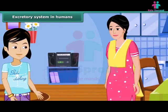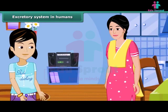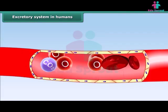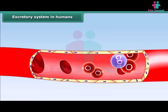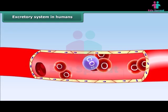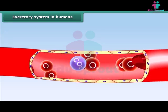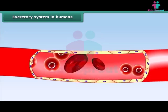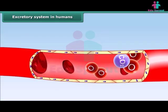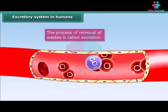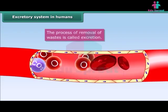Vanita comes home after jogging covered in sweat. Her mother asks her to take a bath. Sweat is a waste that must be removed from the body. Blood collects waste from different parts of the body — these wastes are carbon dioxide, water, salt, urea, and uric acid, which are the result of the metabolic activities of the body. Since they are toxic, they must be removed. The process of removal of wastes resulting from metabolism is called excretion.